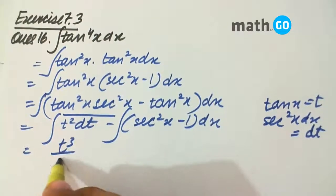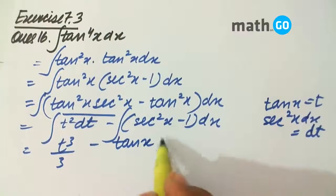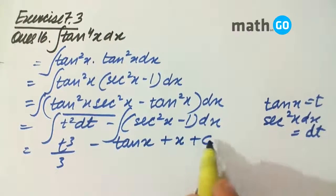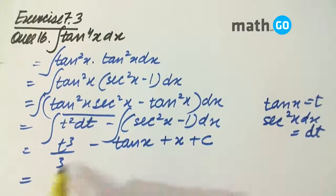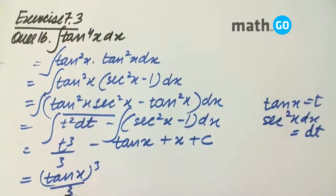So we get t cube by 3 minus this kind of integral is simply tan x plus x plus c. So we simply put the value of t to get tan x cube by 3 minus tan x plus x plus c, which is our answer.